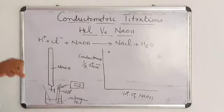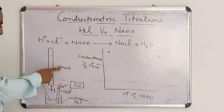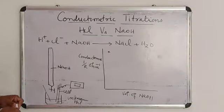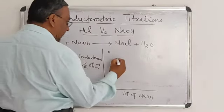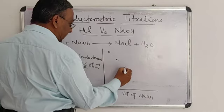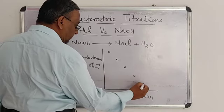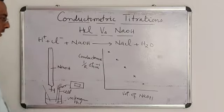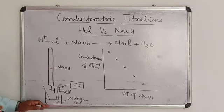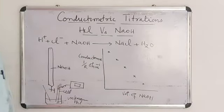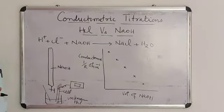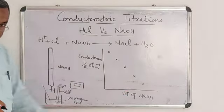The H+ ions are taken up by OH⁻ ions of the base, so the number of H+ ions goes on decreasing. Therefore, conductance decreases. When sodium hydroxide is continuously added to hydrochloric acid, the conductance goes on decreasing. This is due to the replacement of fast-moving H+ ions by slow-moving OH⁻ ions, and therefore the conductance decreases.